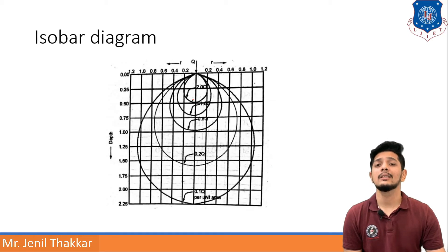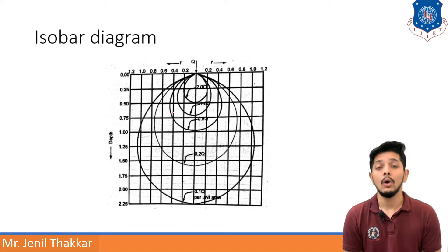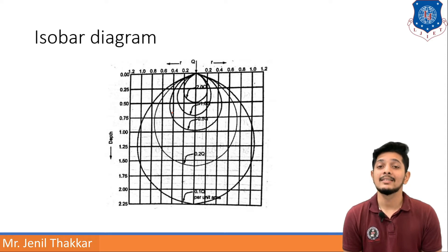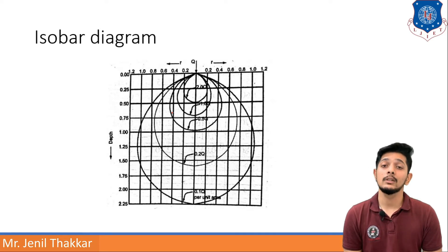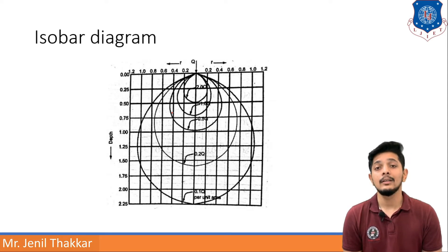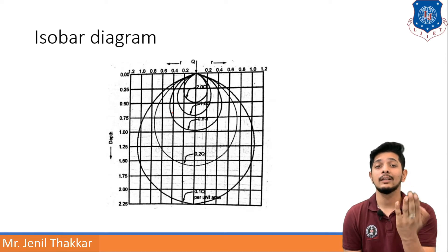An isobar diagram is a curve connecting all the points below the earth's surface that have the same vertical pressure. In other words, it is a contour of points having the same vertical stress. It is a spatial curve passing through all points with equal vertical stresses, and the isobar diagram is shaped like an electric bulb, symmetrical about its vertical axis.